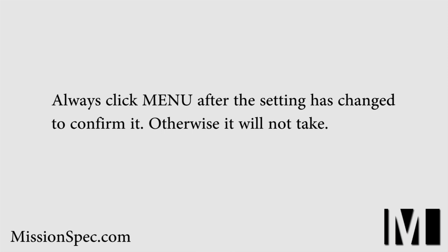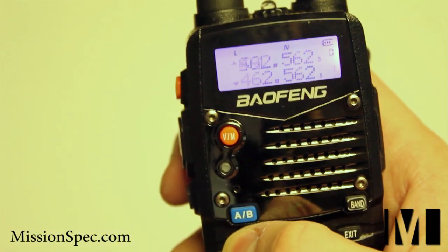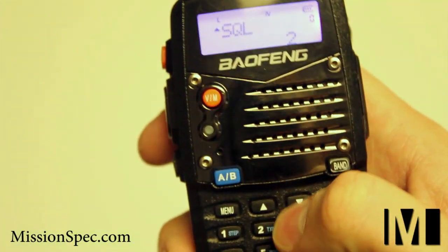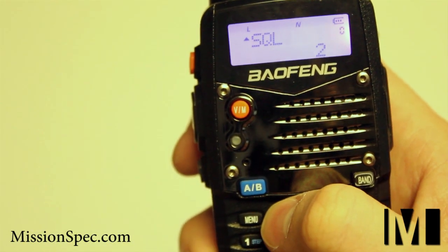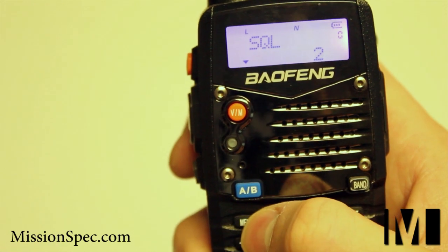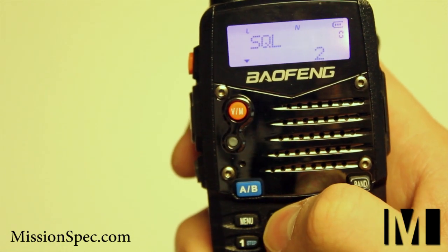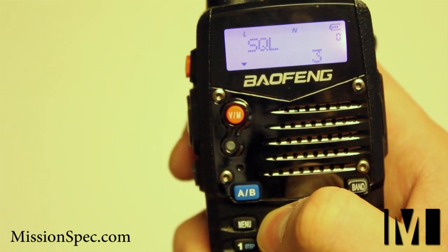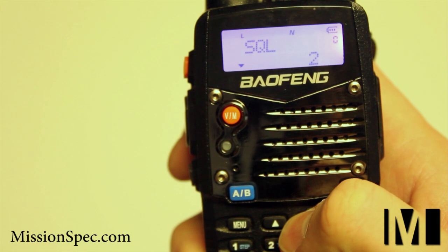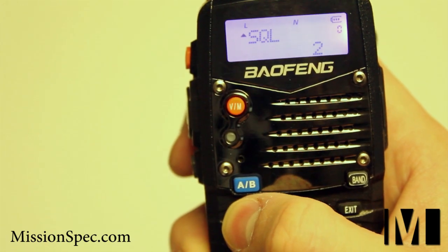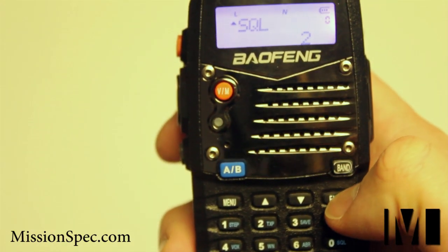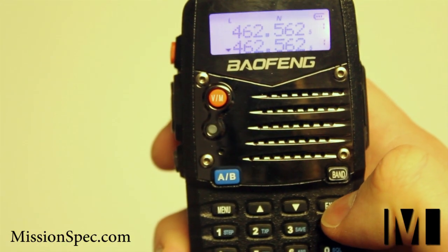Set the squelch in the same way as the frequency step. Click Menu, then arrow to SQL or squelch. Click Menu to edit the setting. Use the arrow keys to set between 2 and 3 for best results and short range communications. Click Menu again to confirm the new setting, then click Exit.